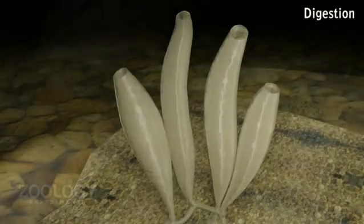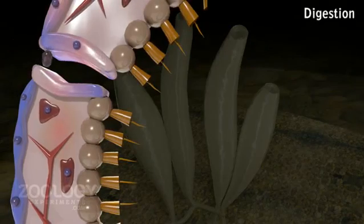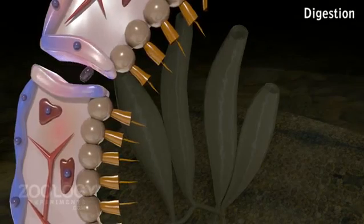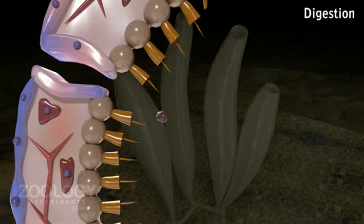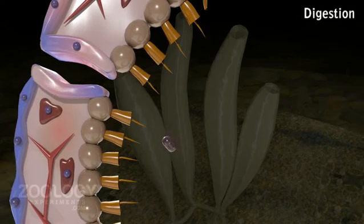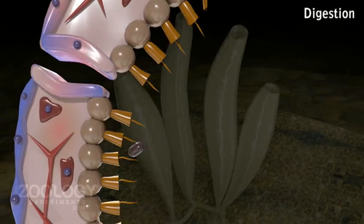Digestion: Planktons are a cheap source of food. Koinocytes capture and digest the food. Amoebocytes receive the partly digested food particles from koinocytes.